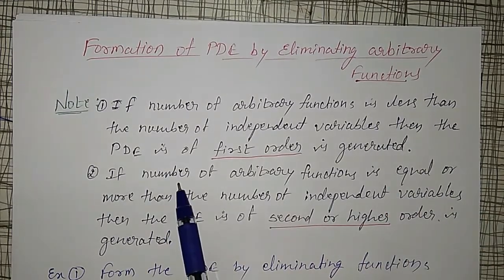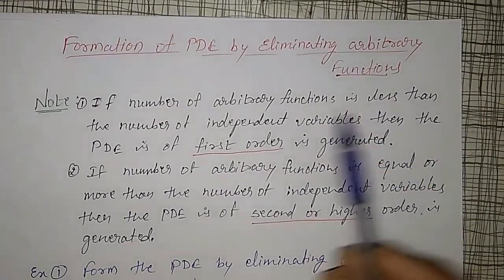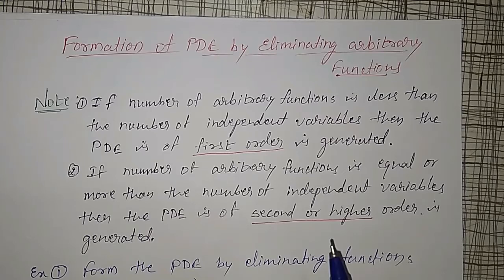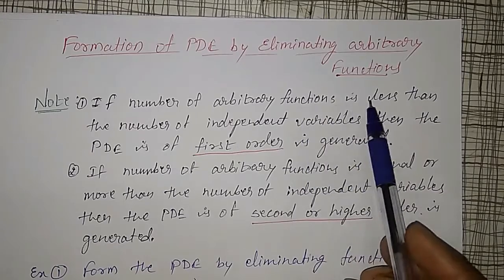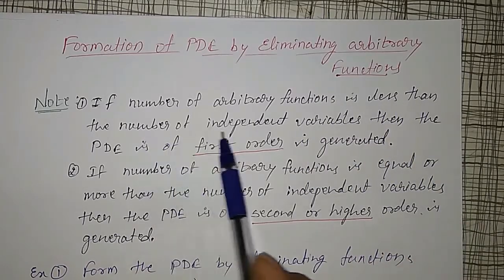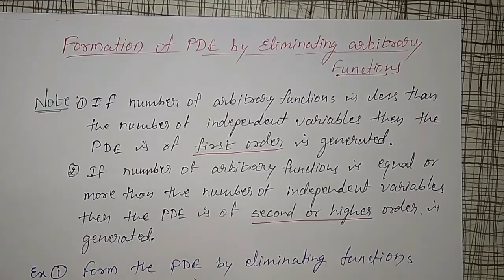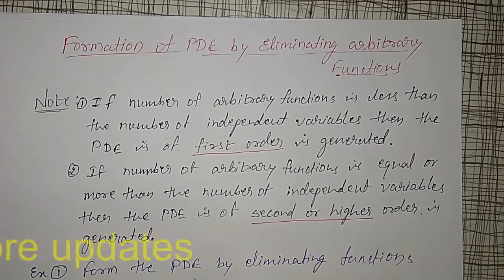If the number of arbitrary functions is less than the number of independent variables, then the partial differential equation we get is of first order. This is similar to the arbitrary constants case, but here it is strictly less than the number of independent variables. If the number of arbitrary functions is equal to or more than the number of independent variables, then a second order or higher order PDE is generated.